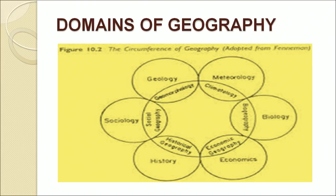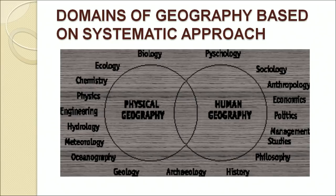The branches, or domains, of geography are vast. Domains of geography are based on the systematic approach — physical geography and human geography. Physical geography has connections to many sciences like biology, ecology, chemistry, physics, engineering, hydrology, meteorology, oceanography and geology.